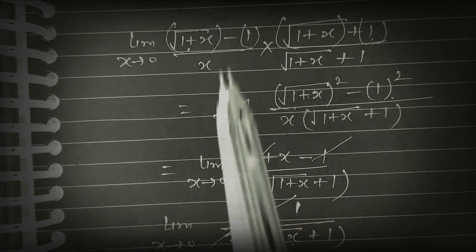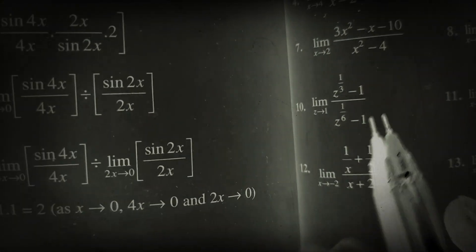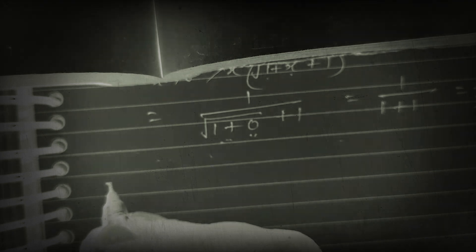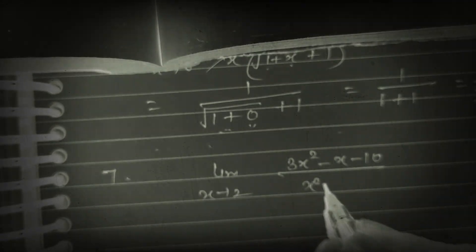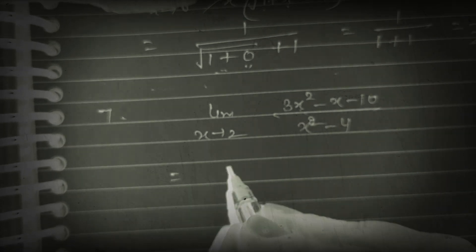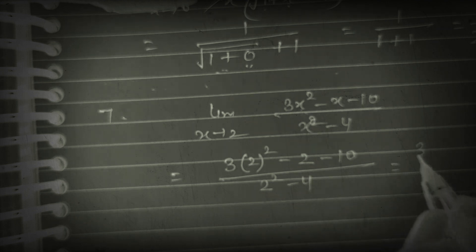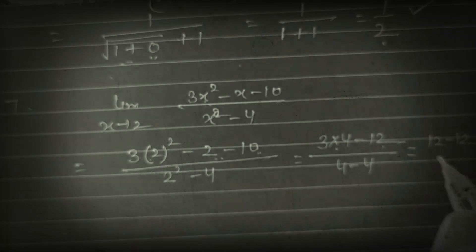If a question is in square root form, you can do rationalization. Now look at question 7: limit x tends to 2 of (3x² − x − 10) upon (x² − 4). Putting x = 2: numerator is 3×4 − 2 − 10 = 12 − 12 = 0, denominator is 4 − 4 = 0. So it is 0/0 form.